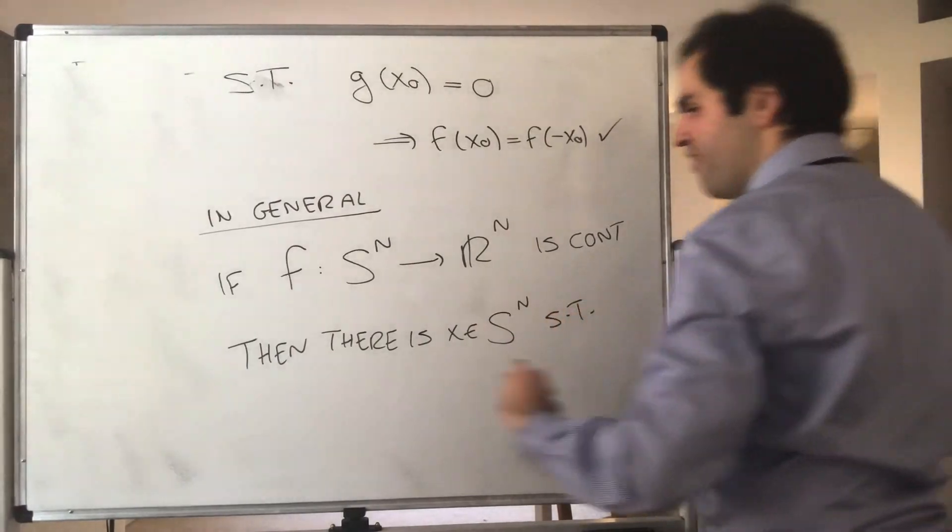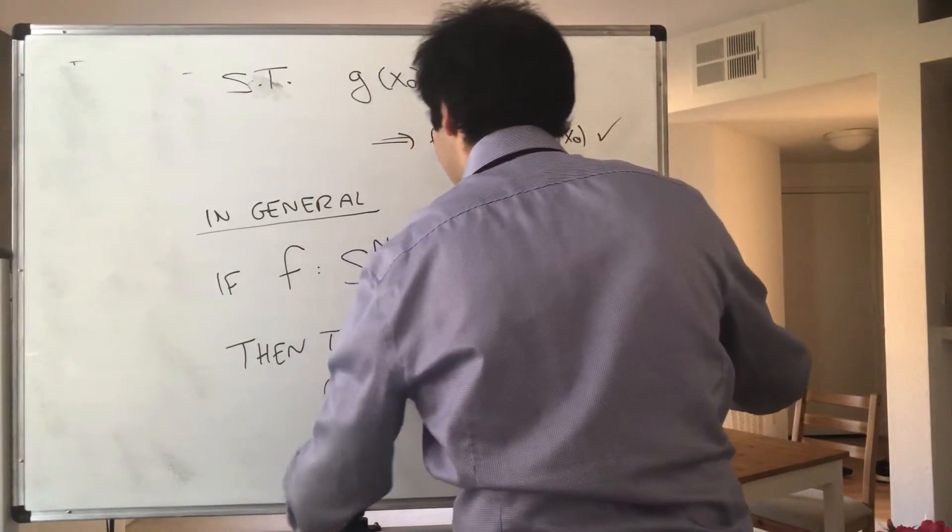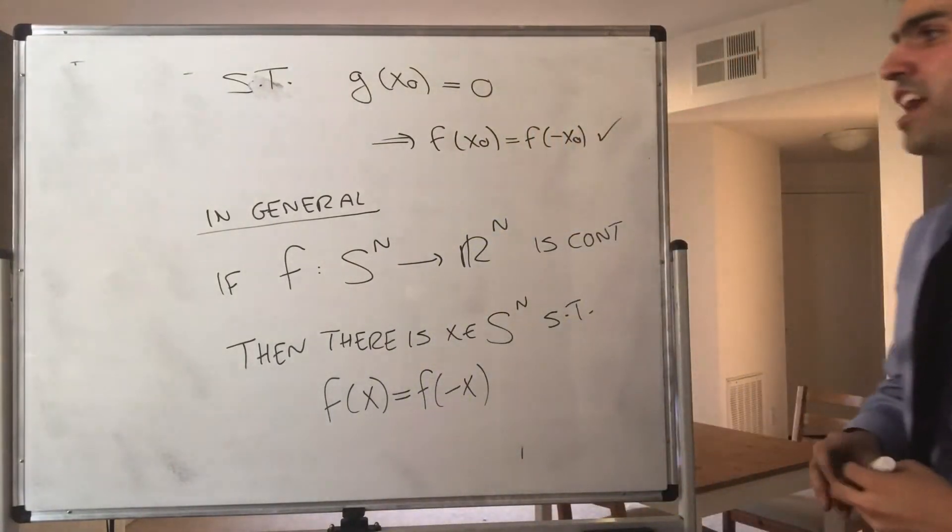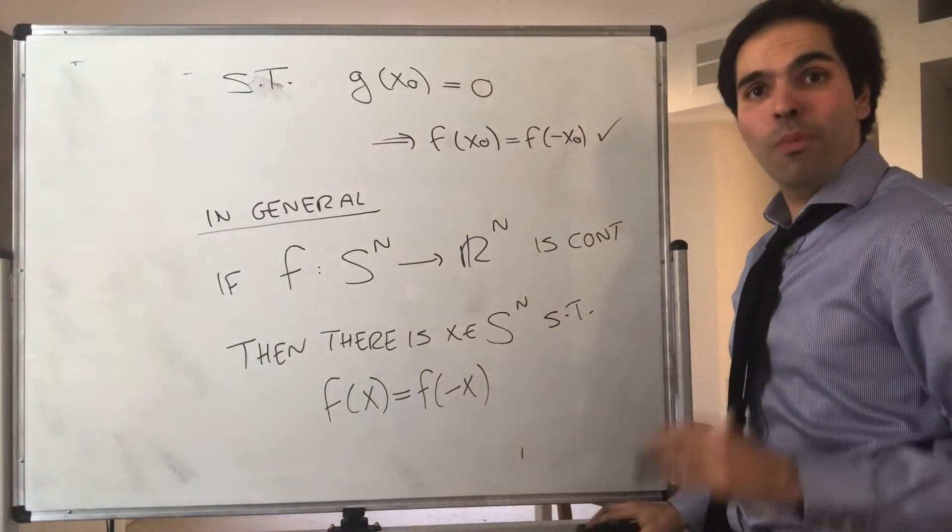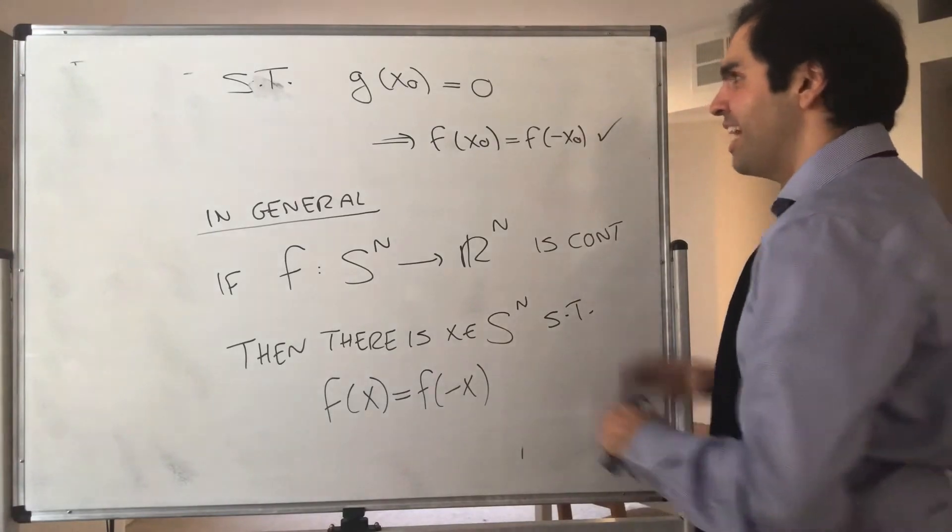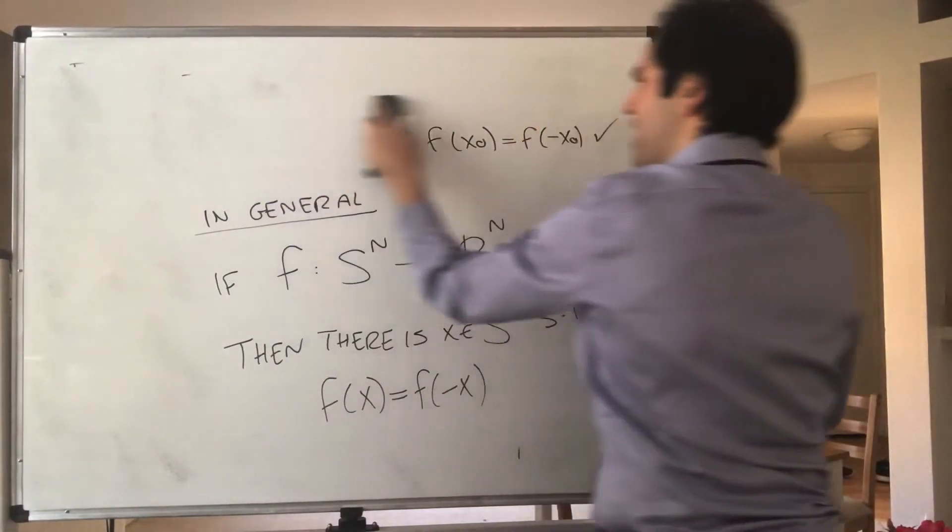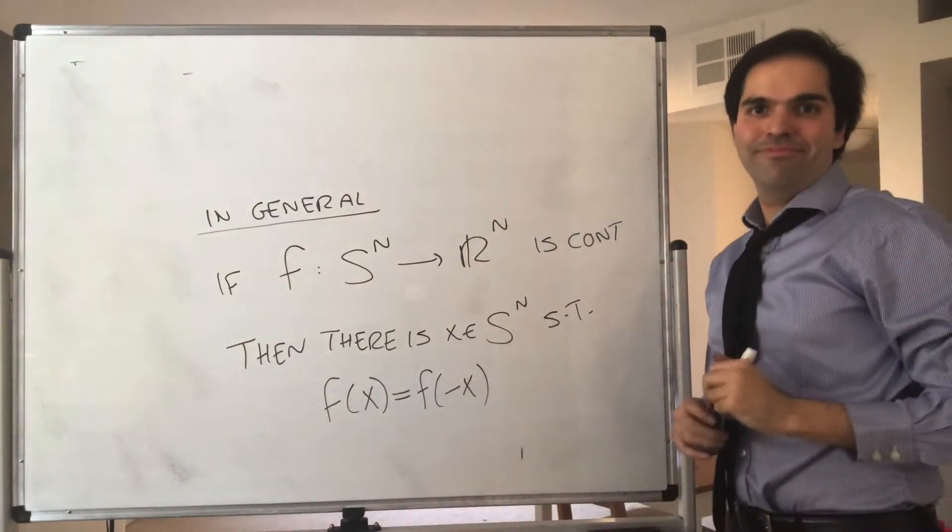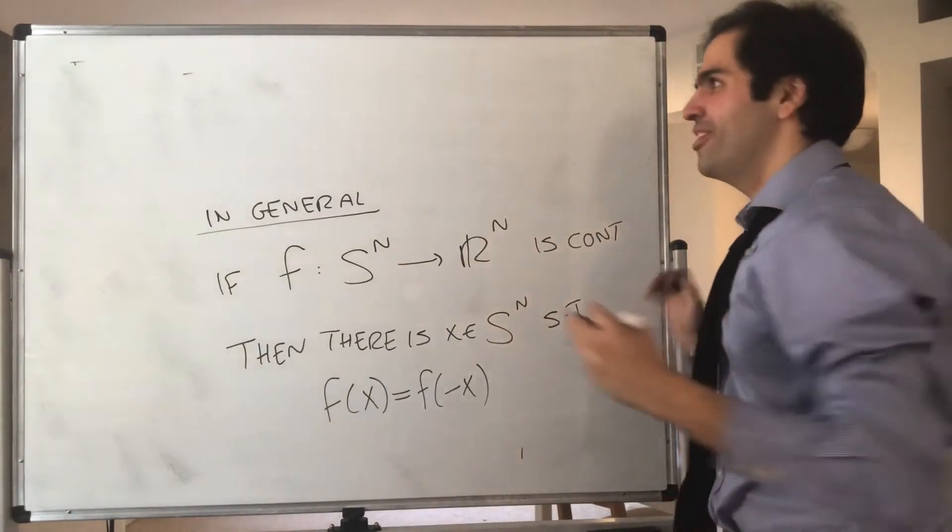Then the same result holds. Then there is x, some point on that sphere, such that f(x) equals f(-x). So just as before, there are two antipodal points on that sphere such that the value of f is the same.